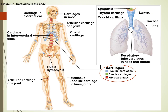A little review about where cartilage lives in the body. Remember from our tissues lecture, we talked about three types of cartilage. Hyaline cartilage is the most common — shown in blue. It's found at the ends of long bones at joints, in the rib cage as costal cartilages, the nose, tracheal rings, and the larynx.